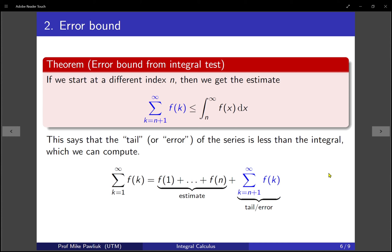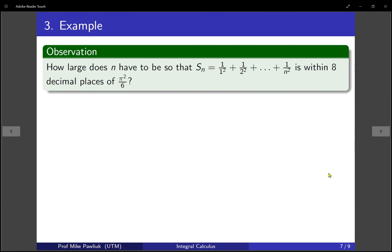So let's look at a concrete example which will help solidify this. How large does n have to be so that the partial sum, if you add up 1 over 1 squared plus 1 over 2 squared all the way up to 1 over n squared, how big do you have to choose n so that this value is within eight decimal places of pi squared over 6? Remember that if we take the infinite sum, we'll get exactly pi squared over 6. So how far do we have to go to get close enough? And for us in this context, close enough means eight decimal places.